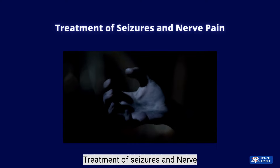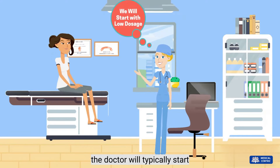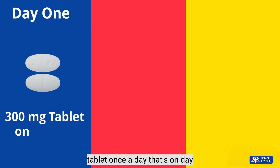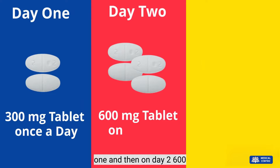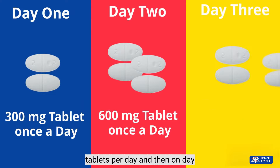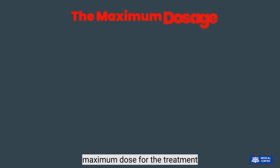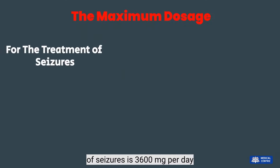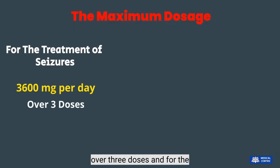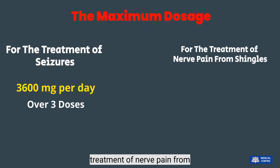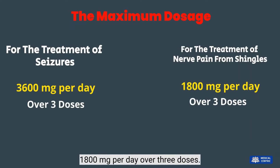For treatment of seizures and nerve pain, the doctor will typically start with a low dose to prevent side effects — one 300 mg tablet once a day on day one, then 600 mg on day two, which equals two tablets per day. On day three, the patient can take three doses per day, each dose being one 300 mg tablet. The maximum dose for seizures is 3,600 mg per day over three doses, and for nerve pain from shingles, the maximum dose is 1,800 mg per day over three doses.